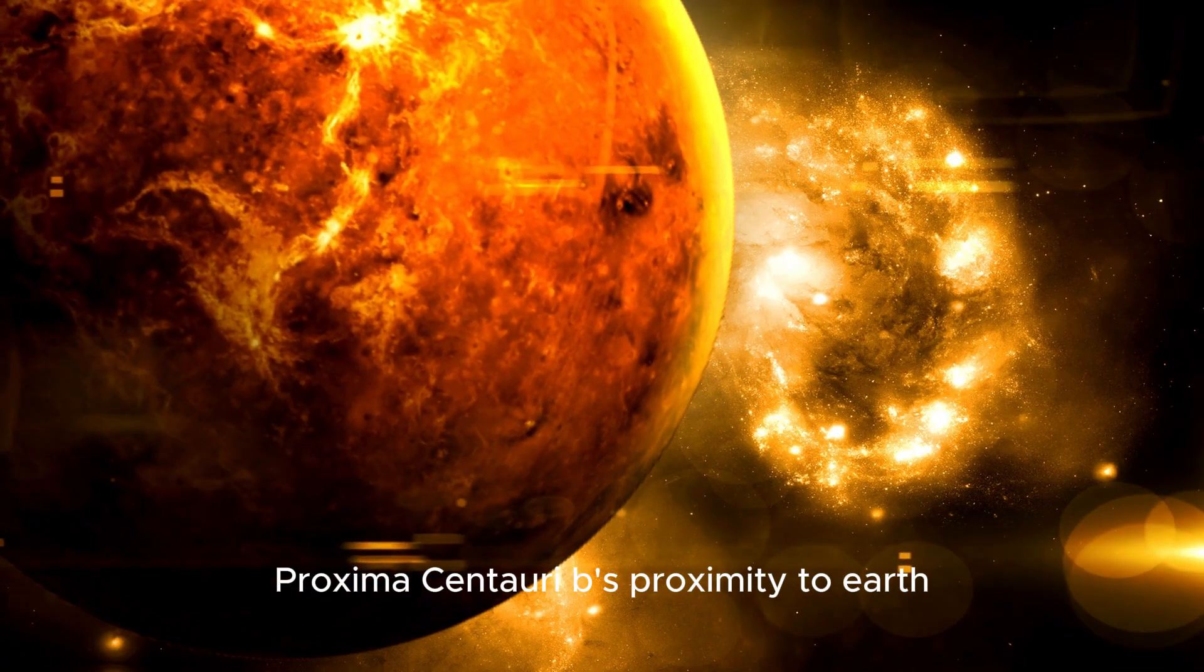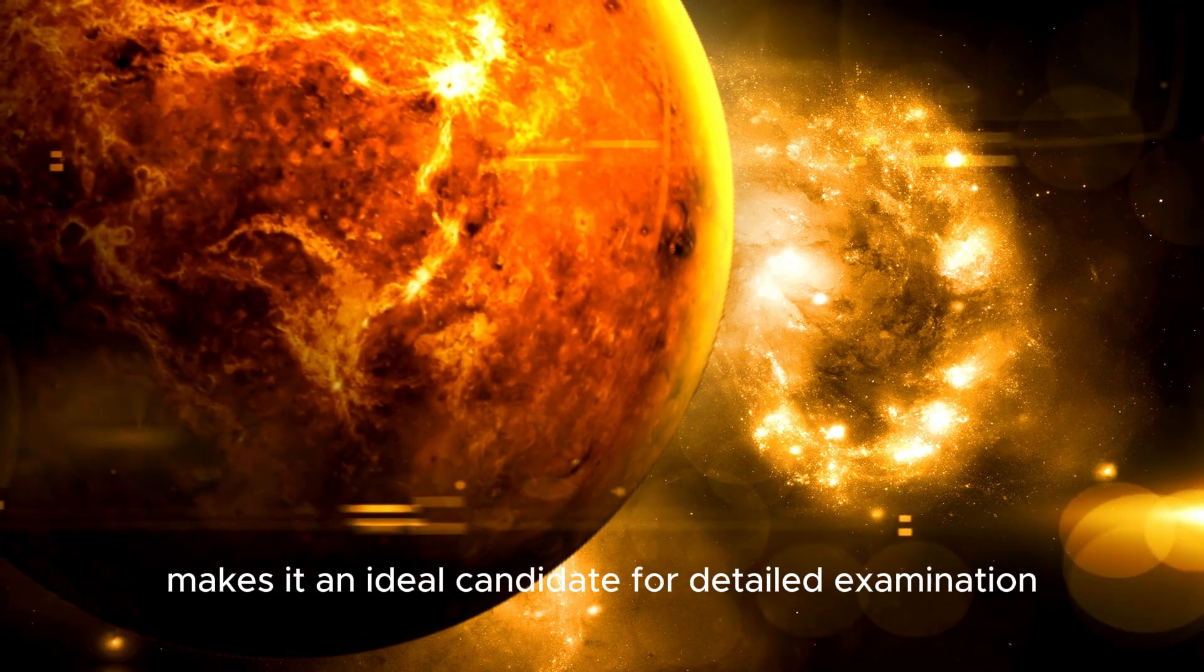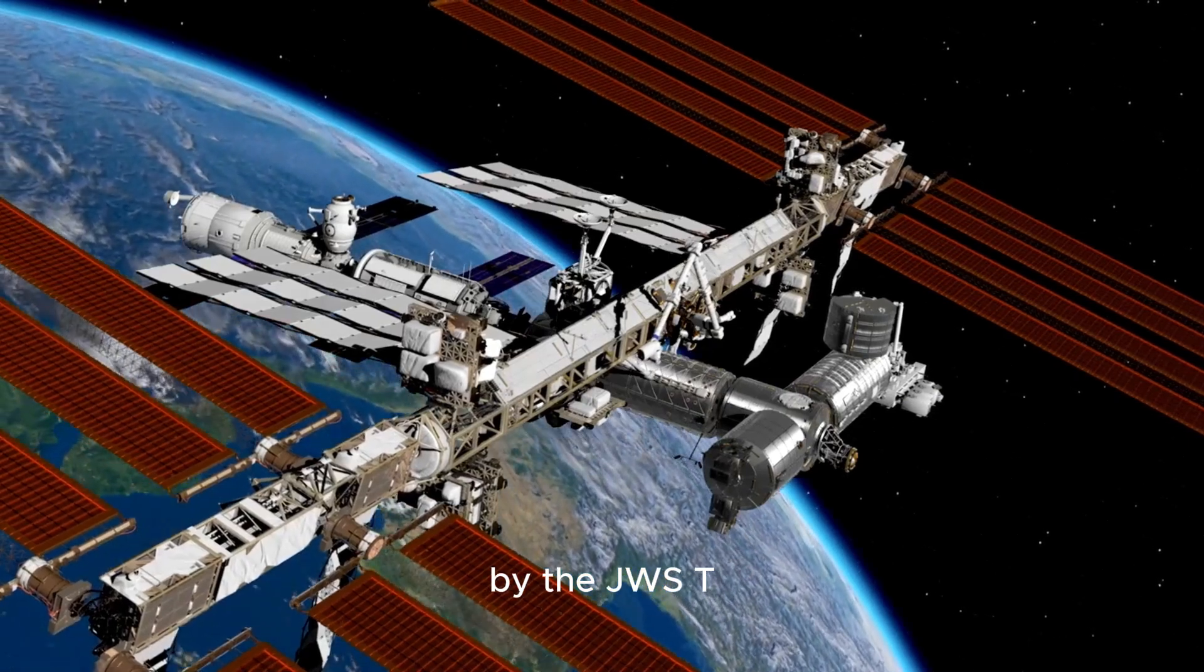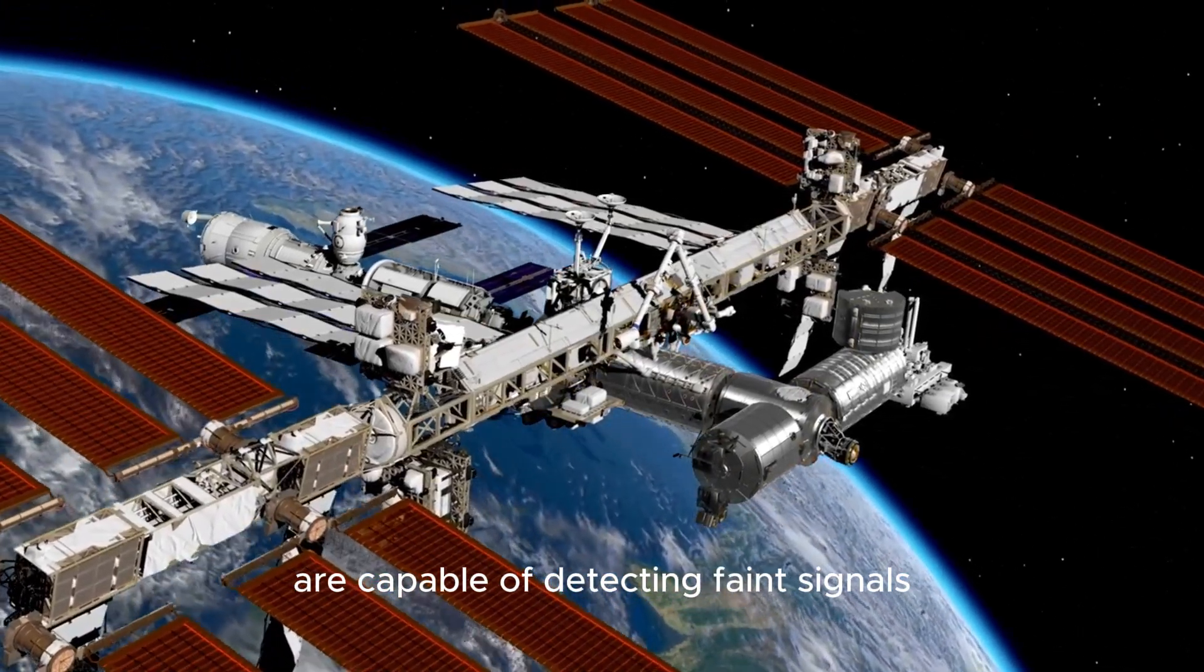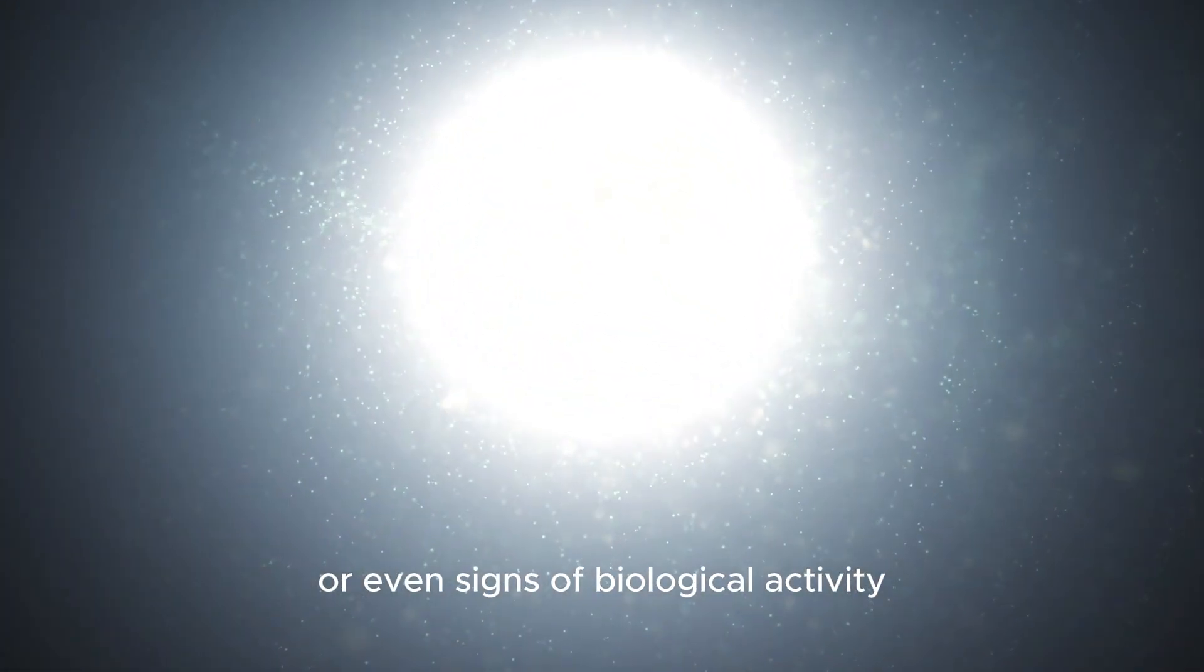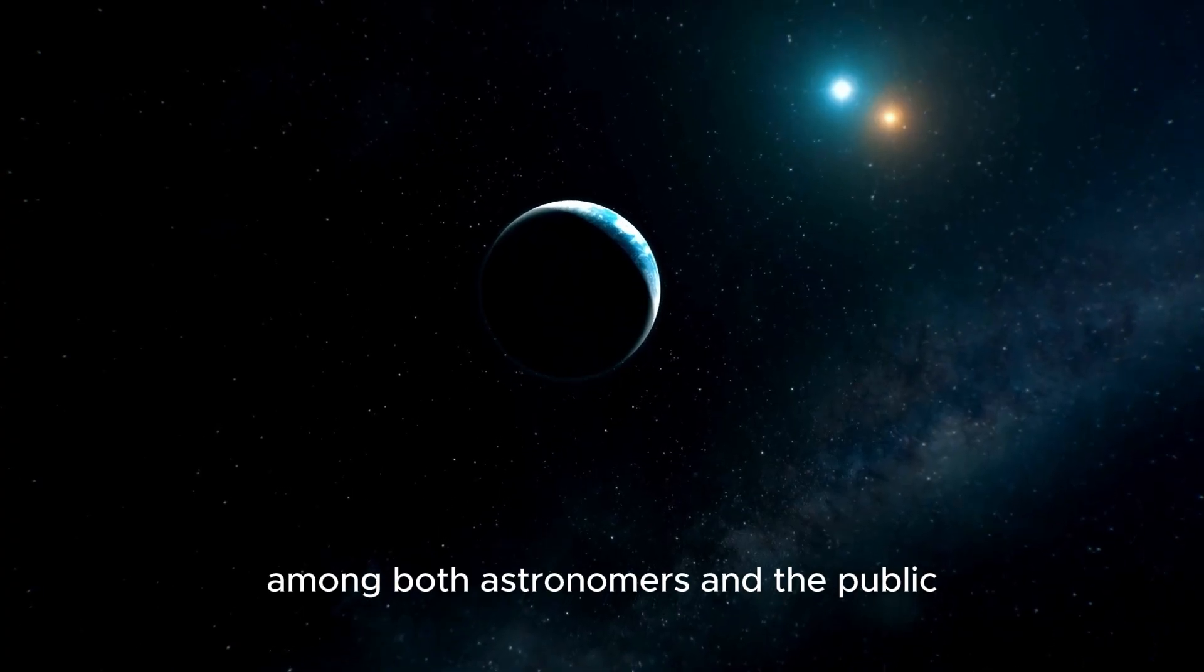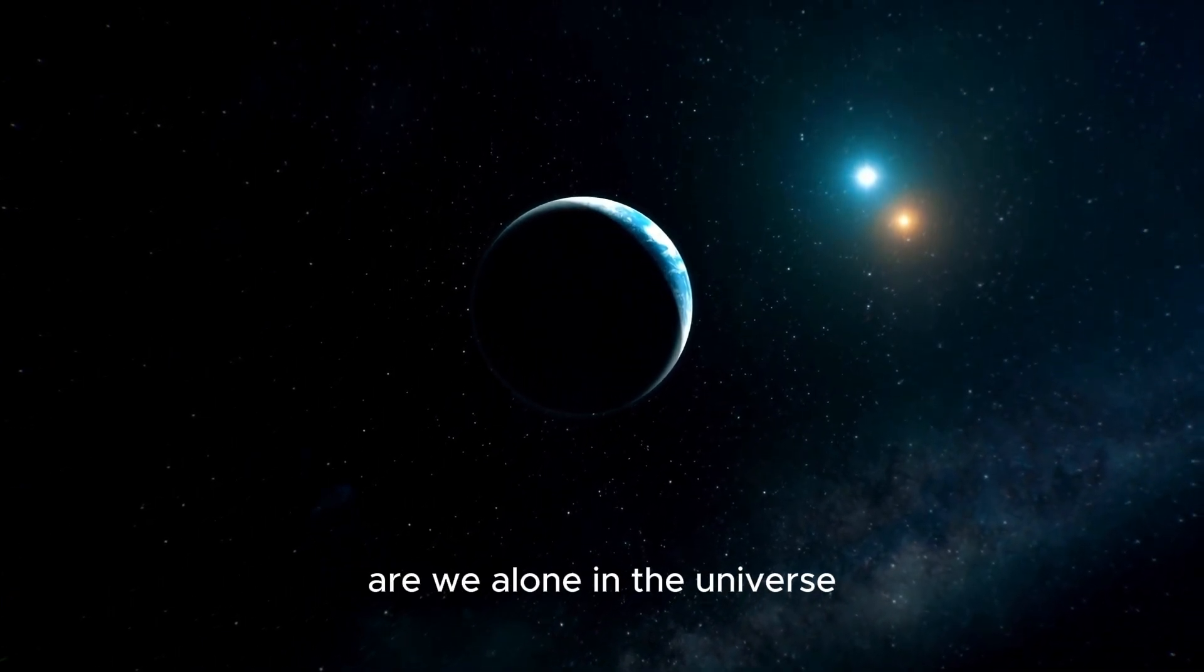Proxima Centauri b's proximity to Earth, combined with its potential for habitability, makes it an ideal candidate for detailed examination by the JWST. The telescope's advanced instruments are capable of detecting faint signals, such as subtle changes in light, that could indicate the presence of an atmosphere or even signs of biological activity. These capabilities have generated excitement among both astronomers and the public, reigniting the age-old question: Are we alone in the universe?